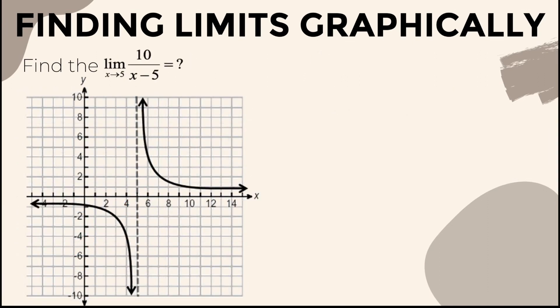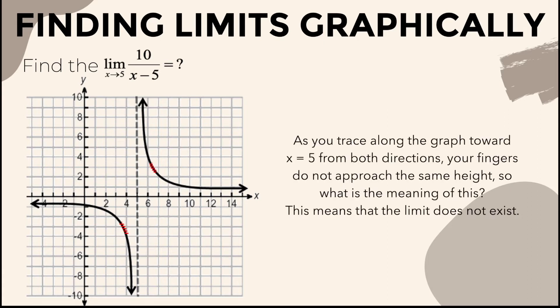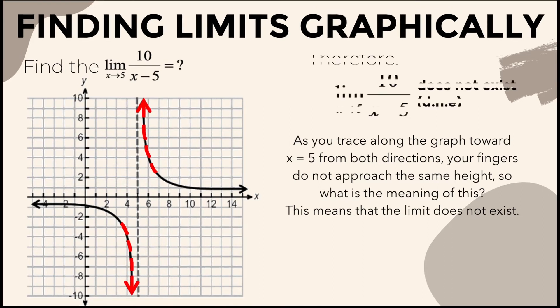For the third example, let's find the limit of the function 10 over x minus 5 as x approaches 5. As you trace along the graph towards x equal to 5 from both directions, your fingers do not approach the same height. So what is the meaning of this? This means that the limit does not exist.